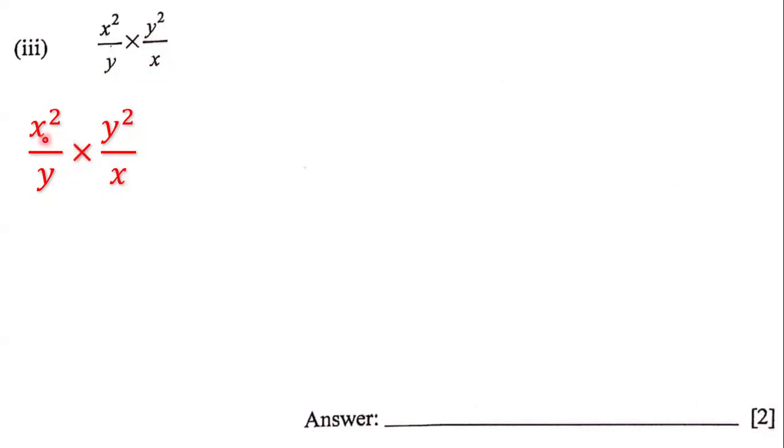The first thing we're going to do is multiply the numerators, and then multiply the denominators. x squared times y squared is x squared y squared, and y times x is yx.